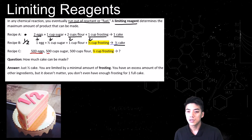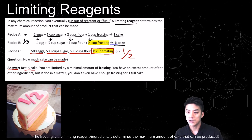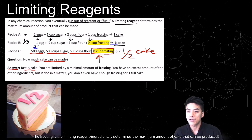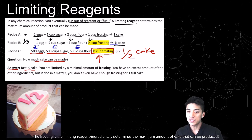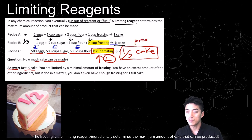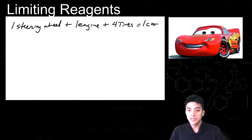But in recipe C, we have 500 eggs, 500 cups of sugar, 500 cups of flour, but just half a cup of frosting. So how much cake can be made? The answer is just half a cake, because you are limited by the amount of frosting. The amount of frosting determines how much product can be made, so it doesn't matter how many eggs, sugar, or flour you have — those are in excess. Your limiting reagent is your frosting, which determines the maximum amount of cake that can be produced.